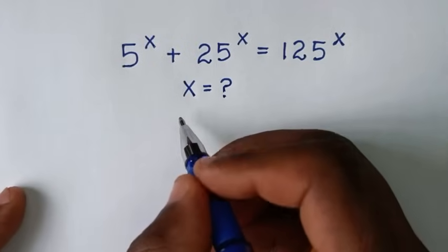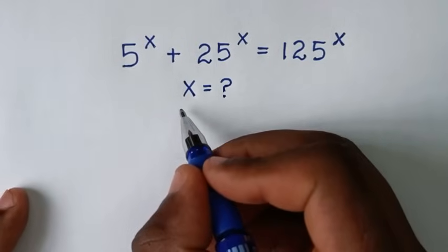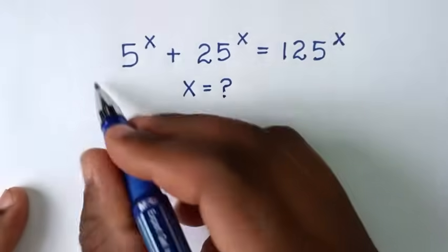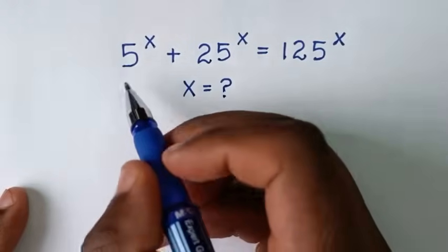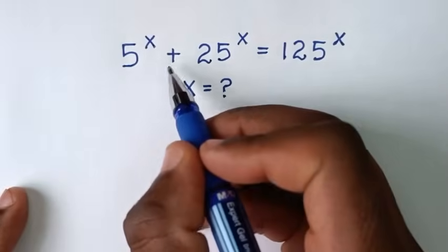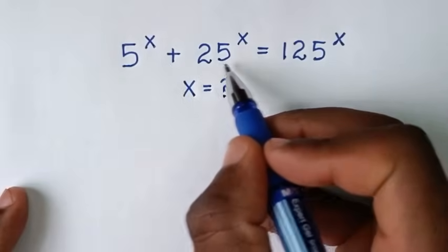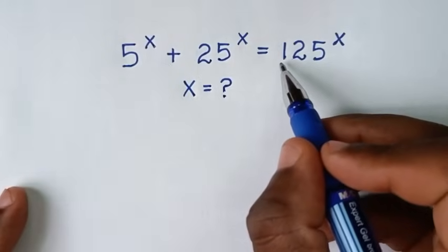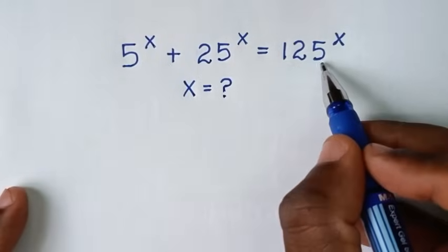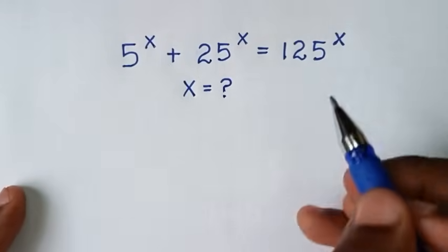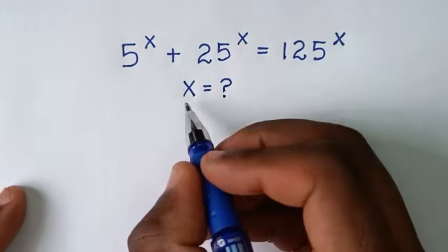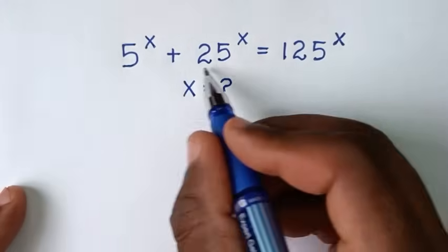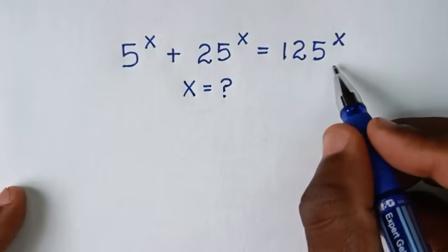Hello, you are welcome to solve this math problem which is 5 power x plus 25 power x is equal to 125 power x — to find the value of x from this equation.